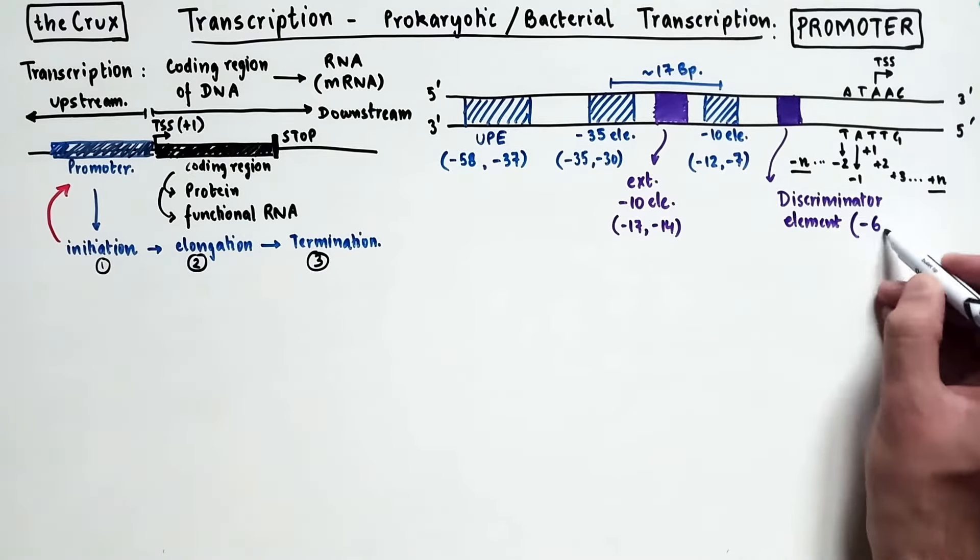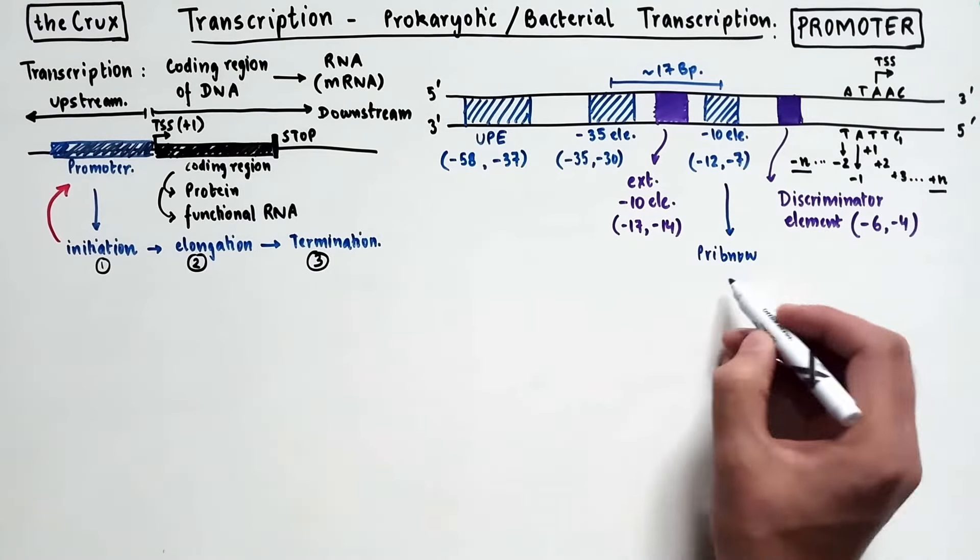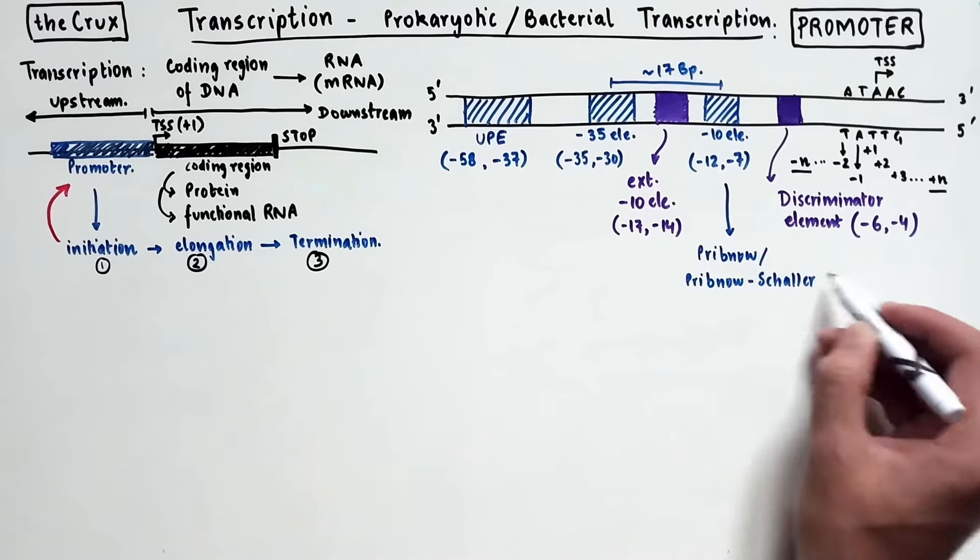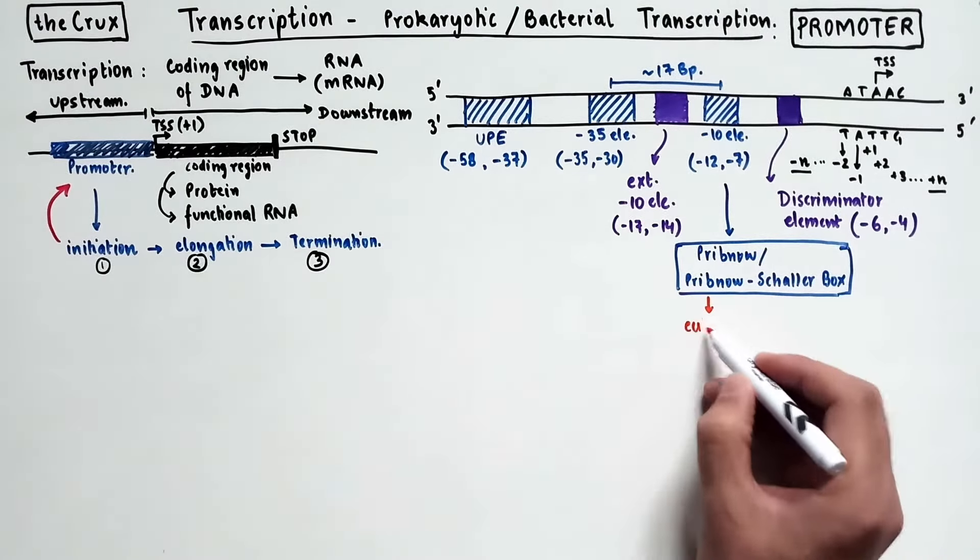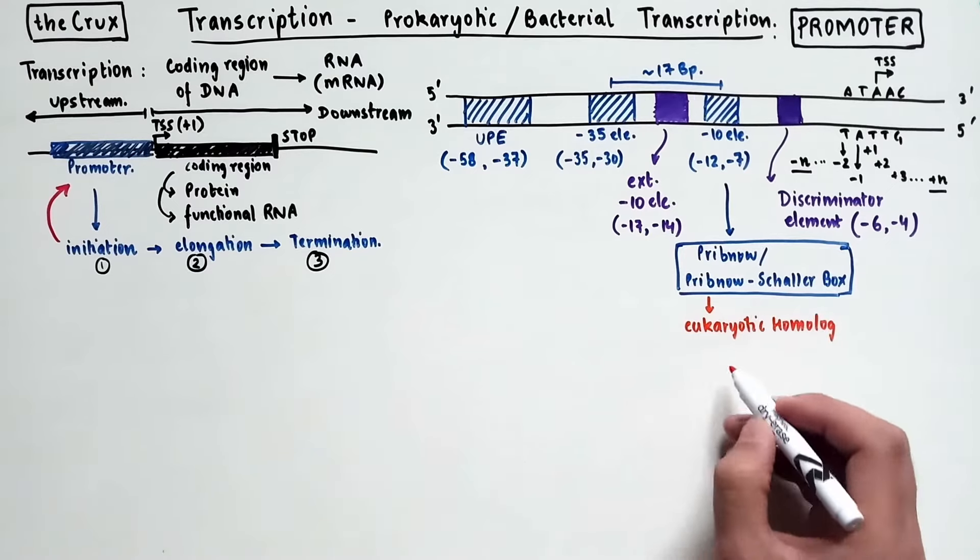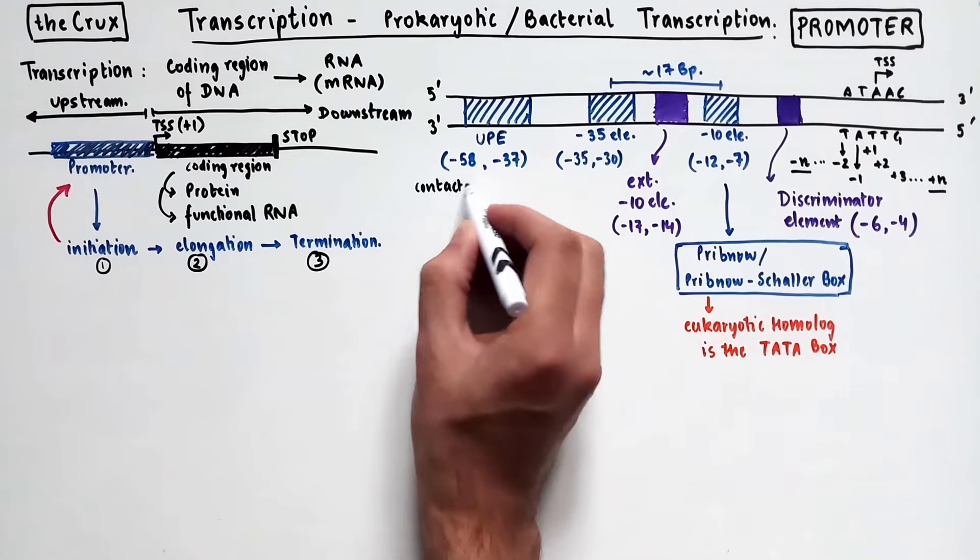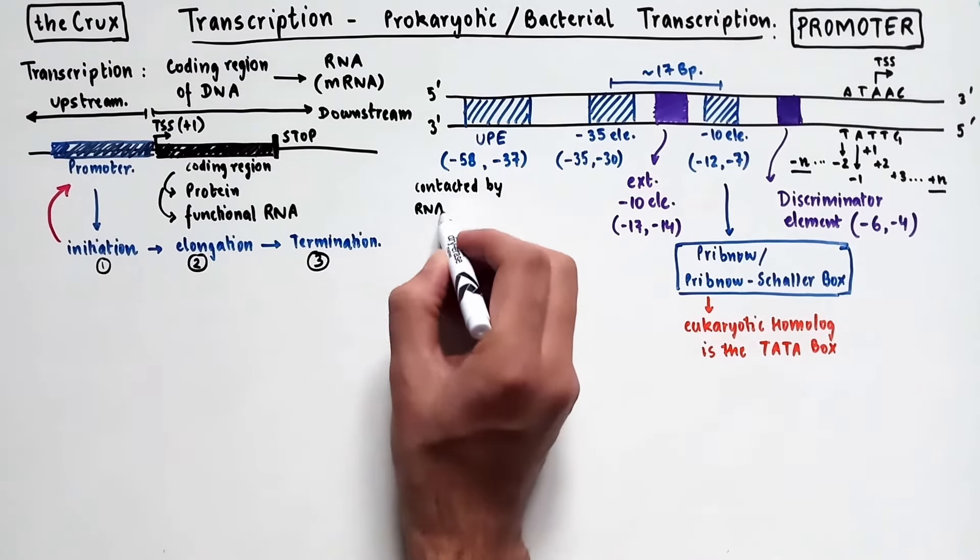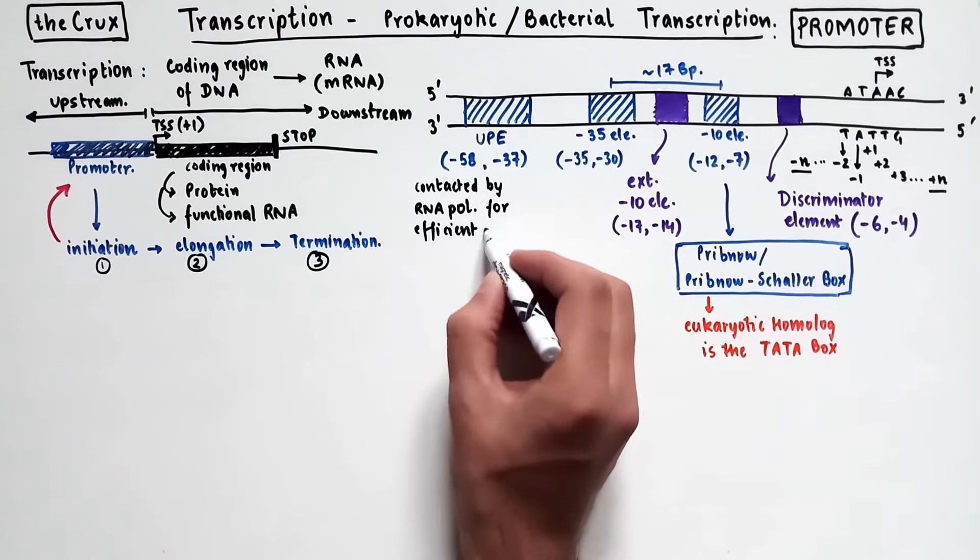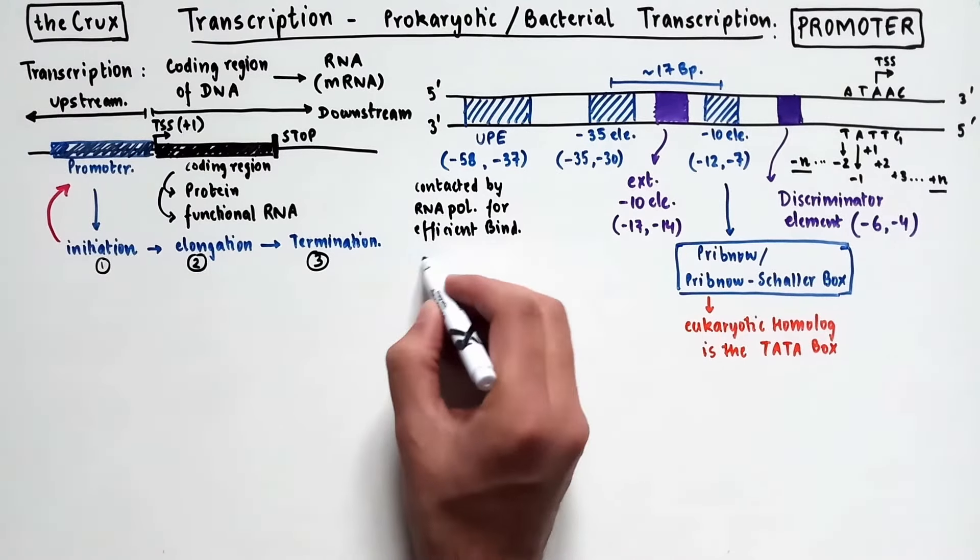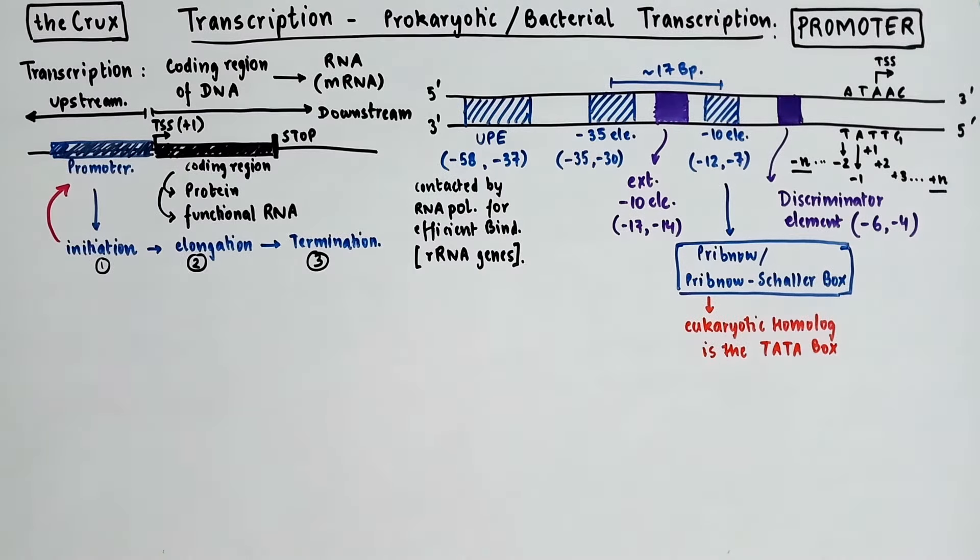As you may have already read it, the negative 10 element is also sometimes called the pribnau box or the pribnau-scheller box. In the eukaryotes, its homologue can be thought of as the Tata box, also known as the Goldberg-Hognes box. Functionally speaking, the UPE element is frequently contacted by the RNA polymerase, which is the enzyme responsible for making RNA, and its binding to the UPE stabilizes it. The UPE is commonly found in the promoter of ribosomal RNA genes.